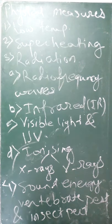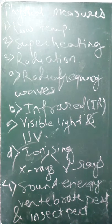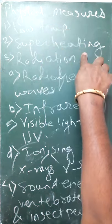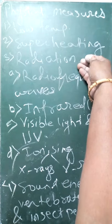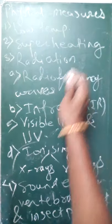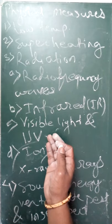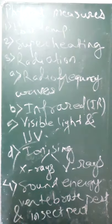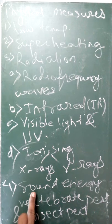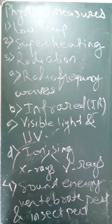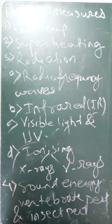These are the four different types of physical measures. First, temperature — including low temperature and superheating (high temperature). Third is radiation, which includes radio frequency waves, infrared, visible light and UV, and ionizing radiation. Fourth is sound energy. In the next video we will study the mechanical measures. Thank you.